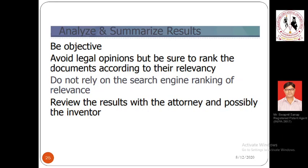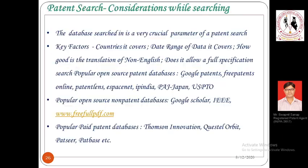Do not only rely on search ranking relevance — some relevant results may appear on the third or fourth page. Rather than narrowing queries to only one or two visible results, consider a considerable number such as 300 or 400 results that can be analyzed by a human reviewer. Also review the results with an attorney and possibly the inventor, since a single person's perspective can limit the analysis. There are two types of patent databases: paid databases and non-paid (free) databases.